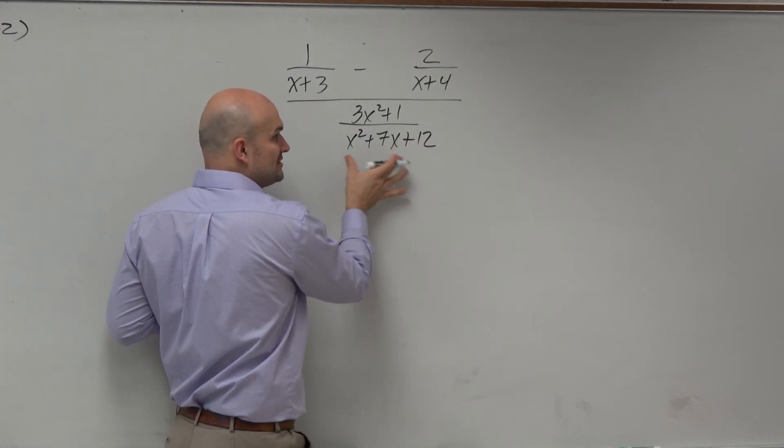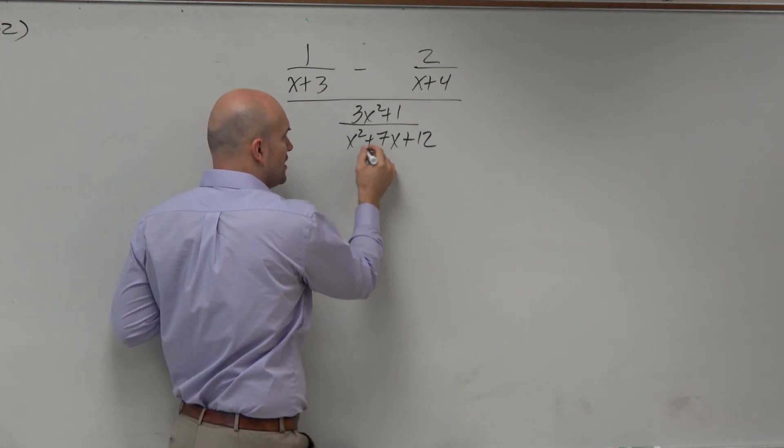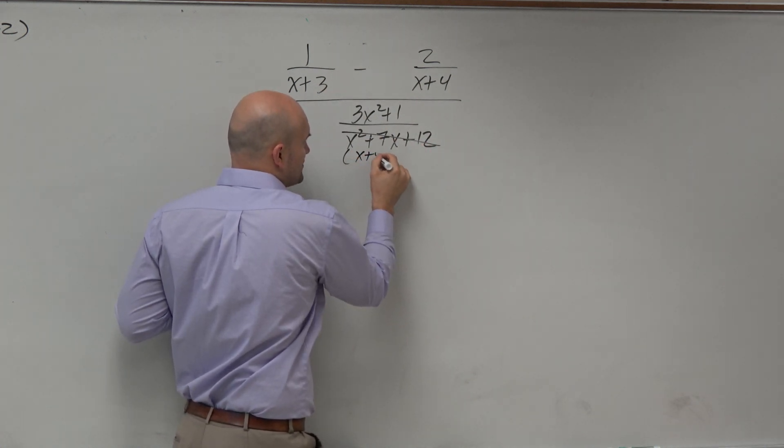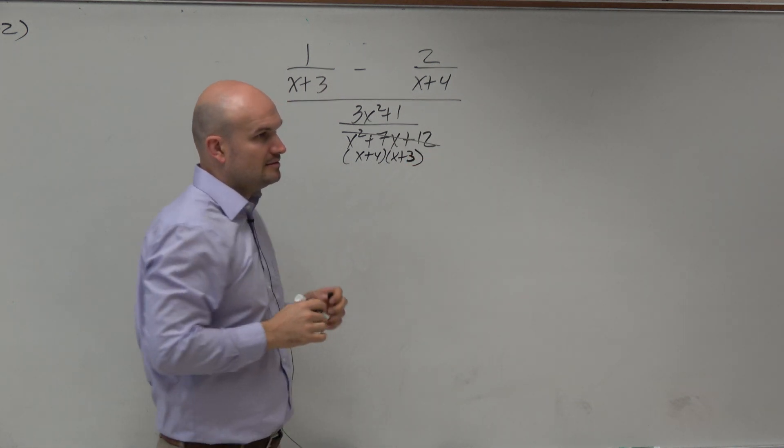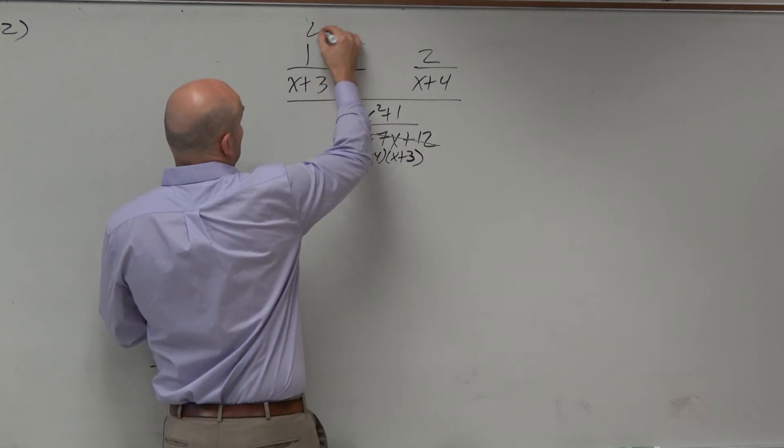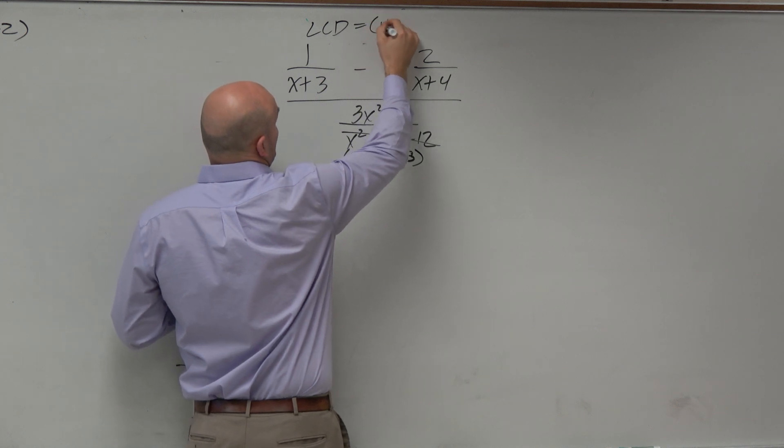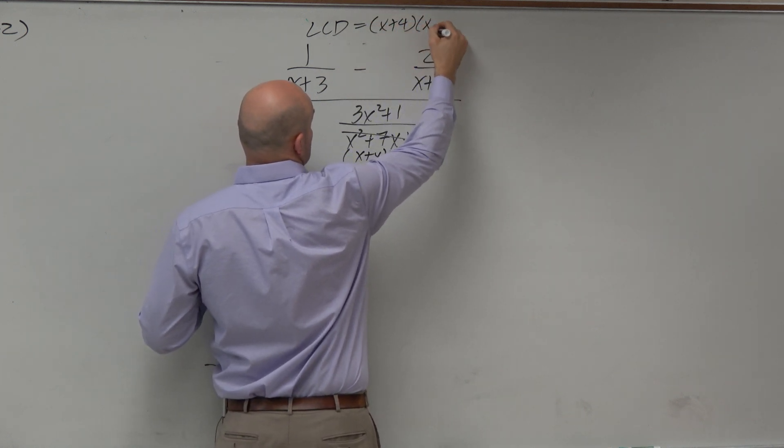So let's factor this and let's use the 4 and the 3. And what do you know, that is the factored form. So my LCD in this problem, my least common denominator, is just the product of x plus 4 times x plus 3.